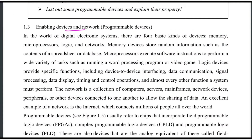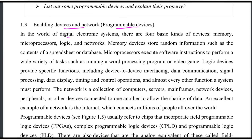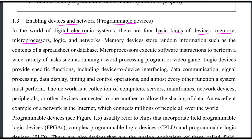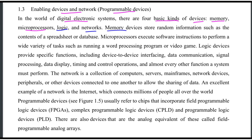In the world of digital electronic systems, there are four basic kinds of devices. Digital electronic systems include memory, microprocessor, logic, and network. Memory devices store random information such as the contents of spreadsheets or databases. Data is stored in storage.